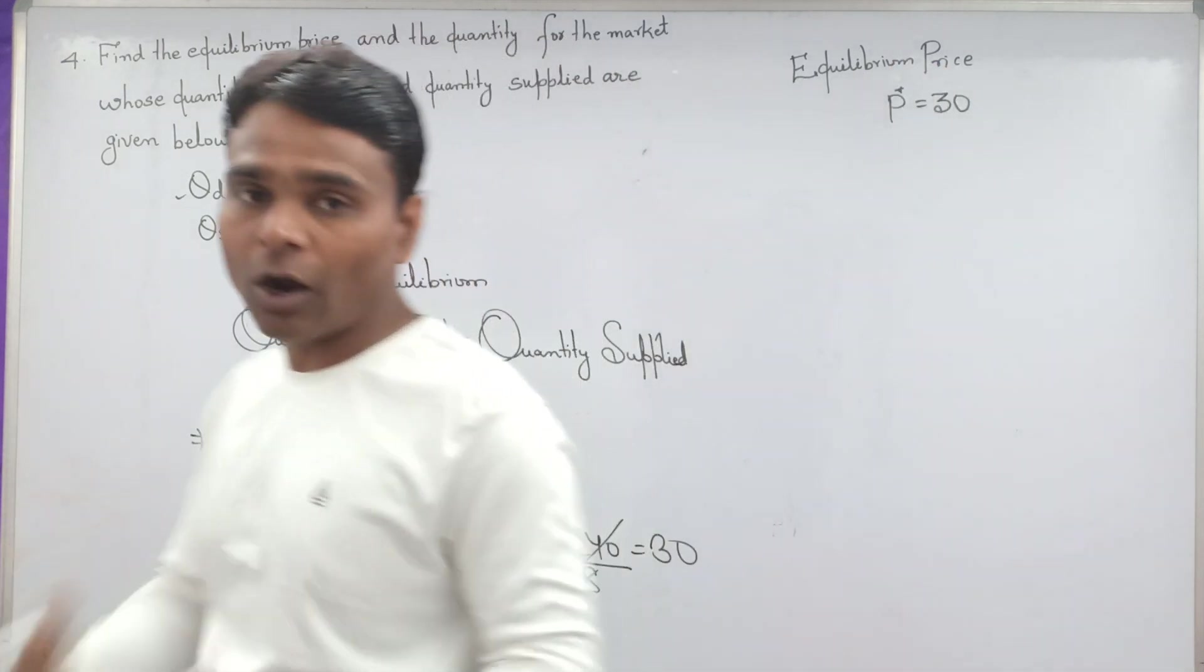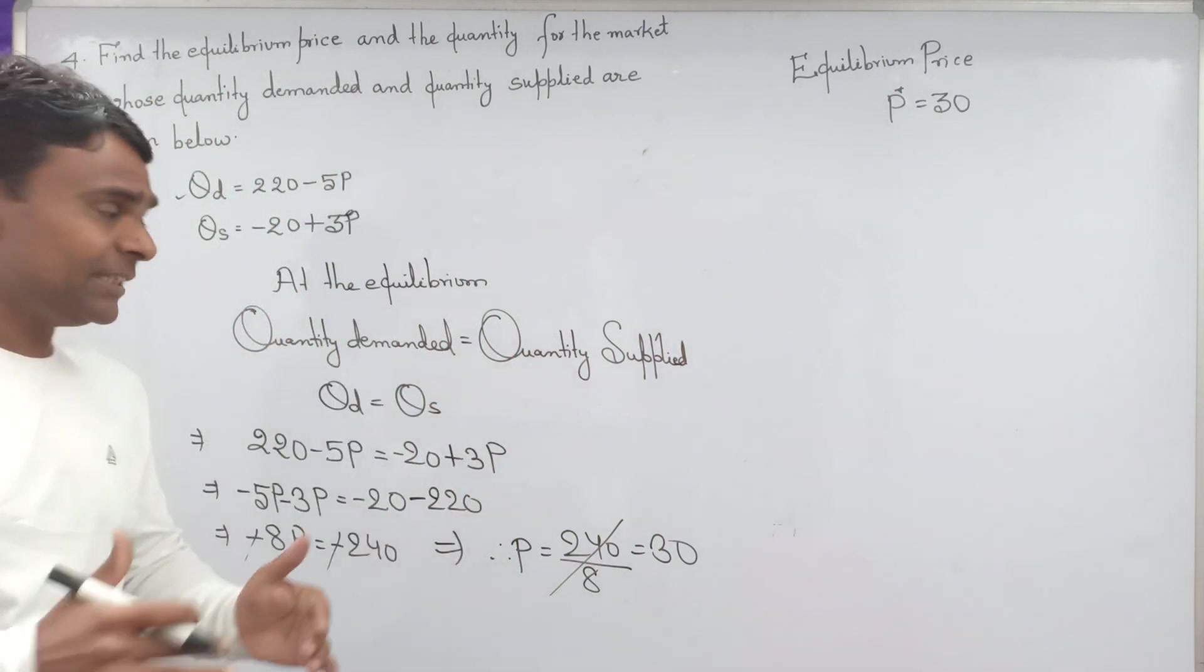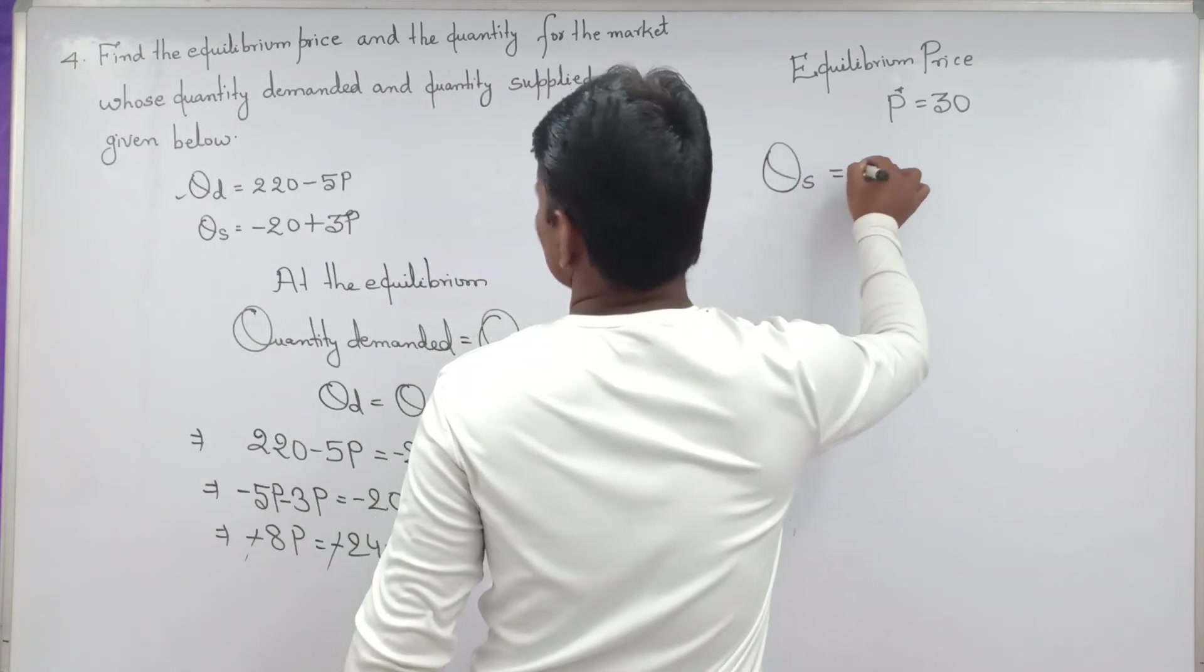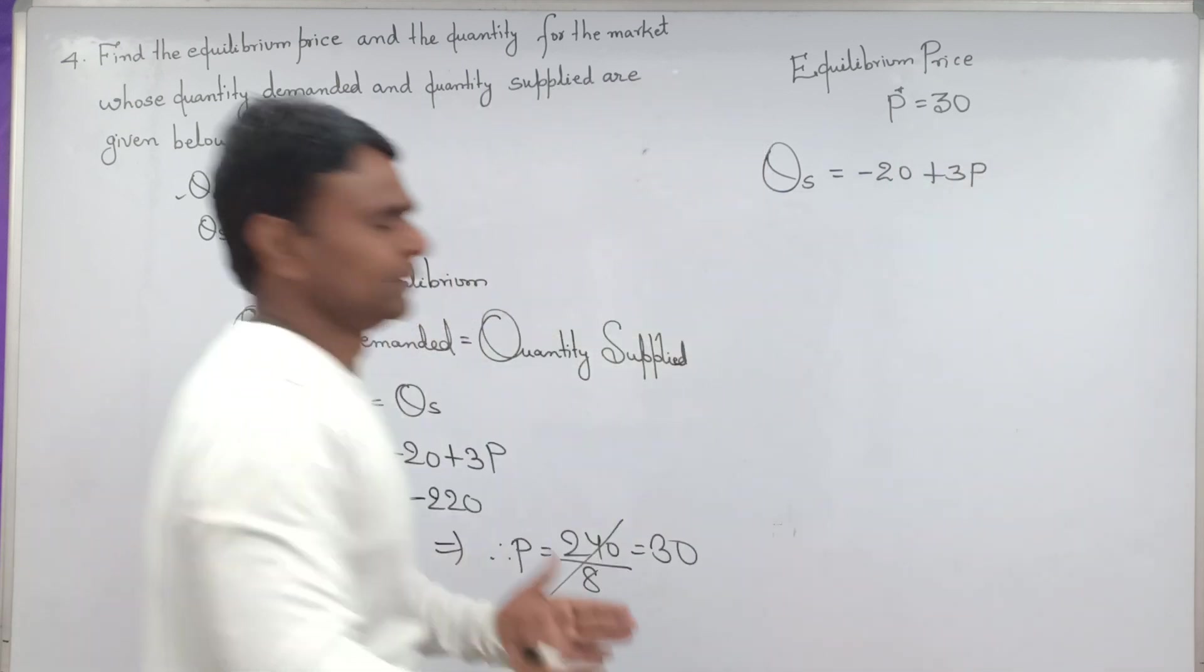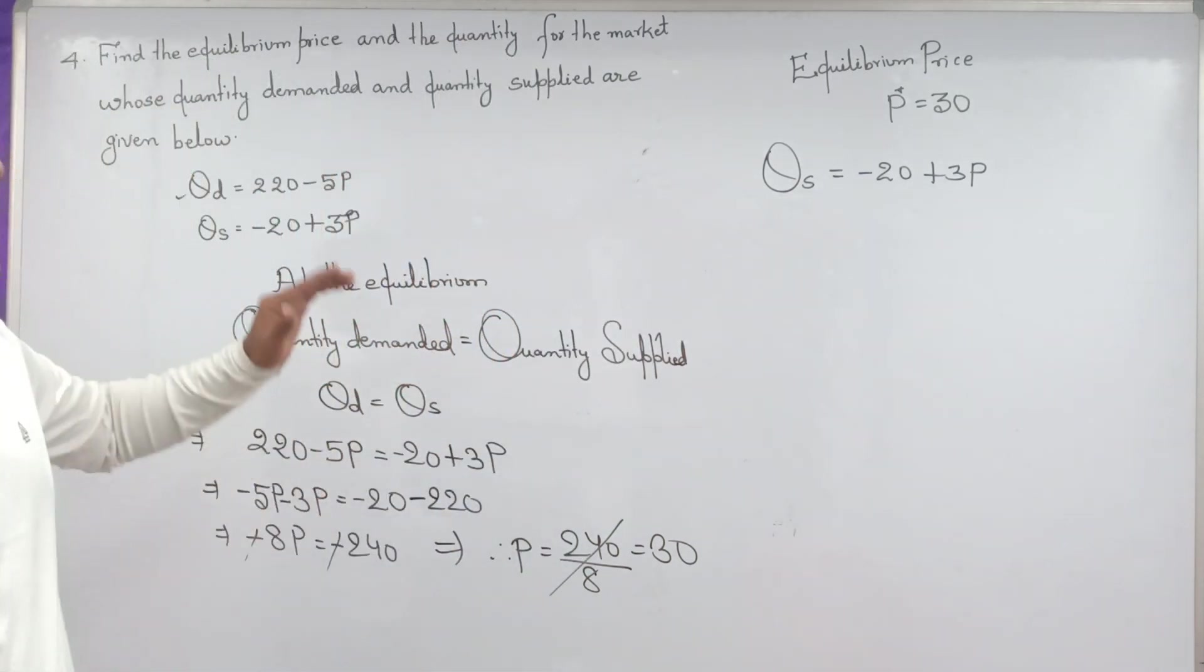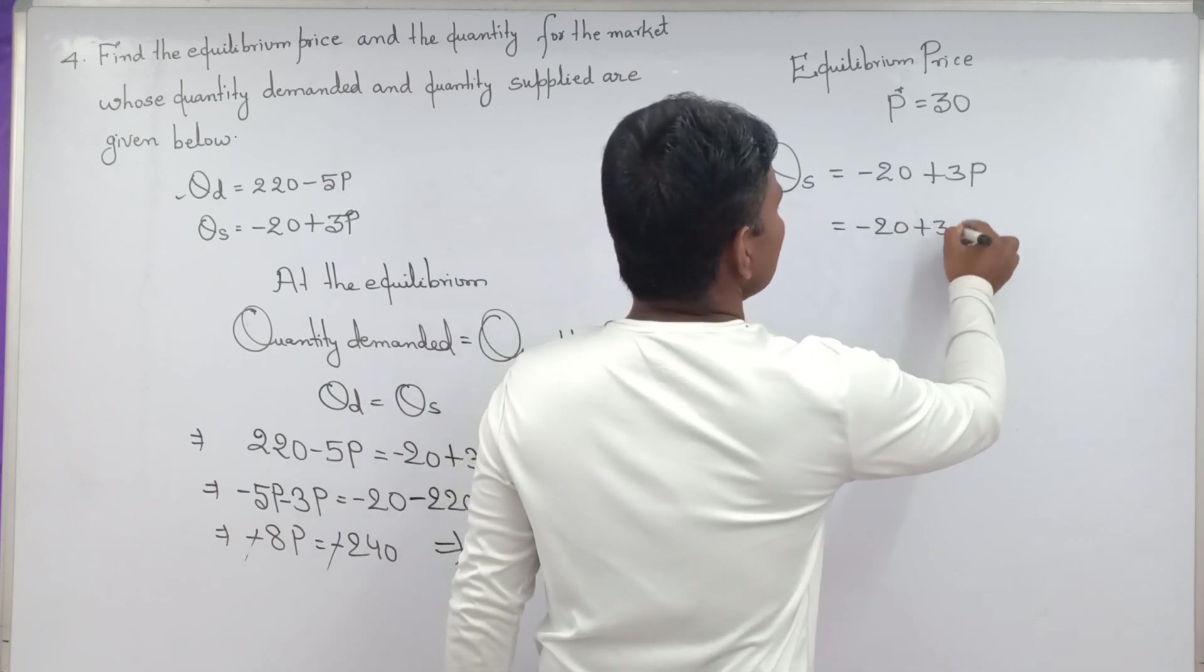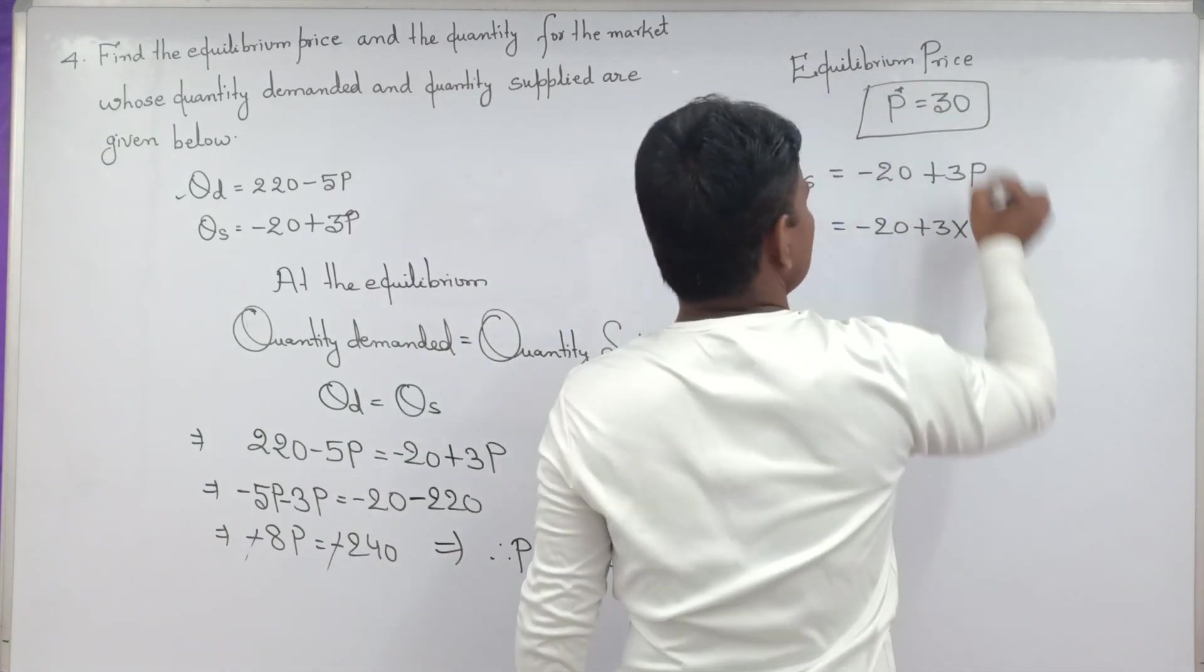When we got price, it becomes very easy to get quantity. QS equal to minus 20 plus 3P. Just substituting the value of P in quantity supplied, that means we will be able to get equilibrium quantity. Minus 20 plus 3 into what value we got for P? Already 30.